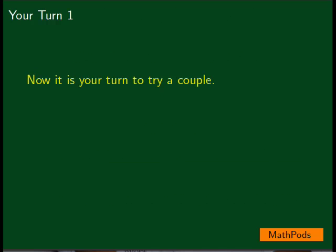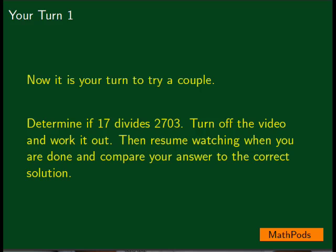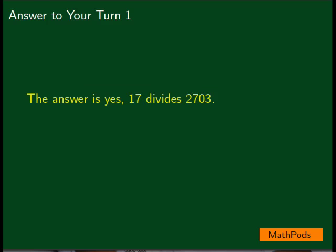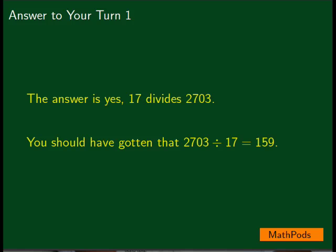Now it's your turn to try a couple of these. Determine if 17 divides 2,703. Turn off the video and work it out. Then resume watching when you are done and compare your answer to the correct solution. The answer is yes — 17 divides 2,703. You should have gotten that 2,703 divided by 17 is equal to 159.